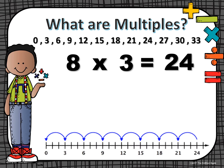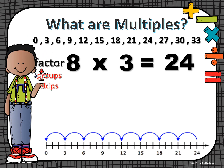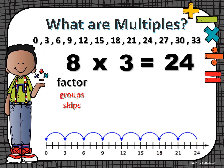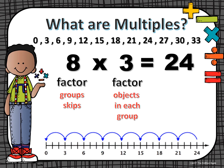So if I were to look at a number line, one leap of 3 would be 3, two groups of 3 would be 6, another group of 3 would be 9, another group would be 12, and it would continue on and on. So if we look at our multiplication fact here, we know our first factor tells us how many groups or skips on a number line we have. Our second factor tells us how many objects are in each group or how many are in each skip.